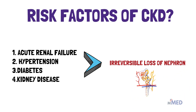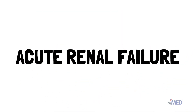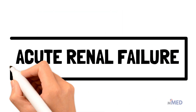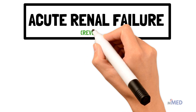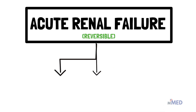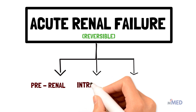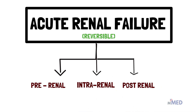Acute renal failure can lead to chronic kidney failure. Acute renal failure, unlike chronic kidney failure, is reversible. There are many causes of ARF. One way to categorize them is pre-renal causes, intra-renal causes, and post-renal causes.